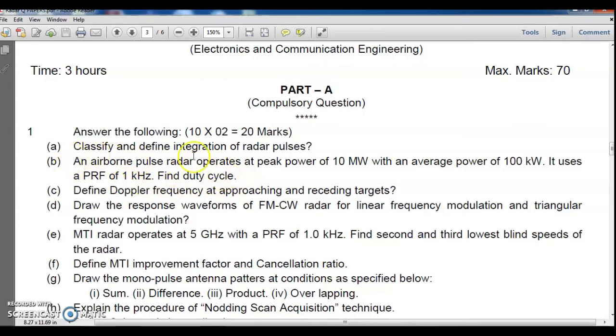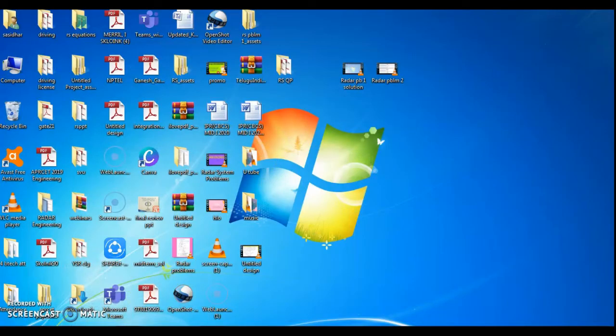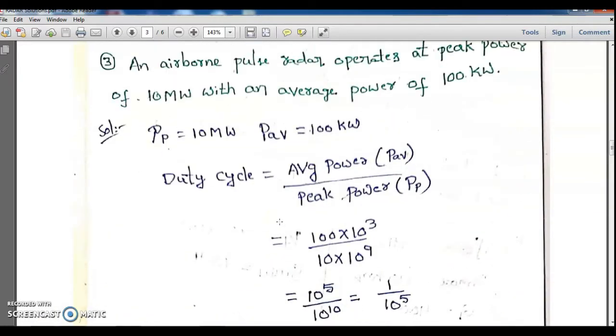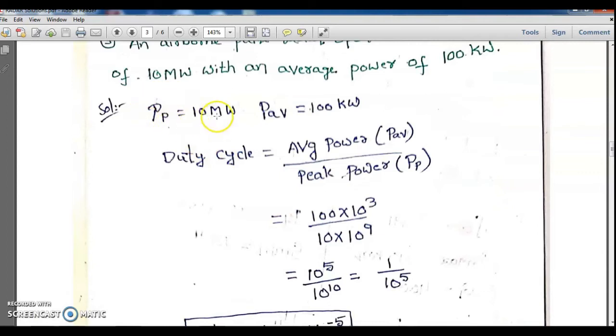Let's see the solution for this problem. These are the given parameters: peak power of 10 megawatts or gigawatts (I'm assuming gigawatts), average power is 100 kilowatts. This is the duty cycle formula: average power divided by peak power. Average power is given as 100 kilowatts and peak power is given as